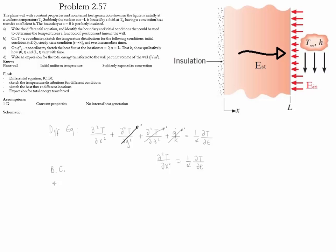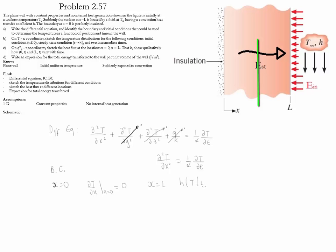Let's now do the boundary conditions. At x = 0, we notice that there is insulation, therefore ∂T/∂x at x = 0 is equal to 0. At the other side of the wall we have convection, therefore we write it as: -k ∂T/∂x at x = L, which equals h times [T(L,t) minus the fluid temperature].